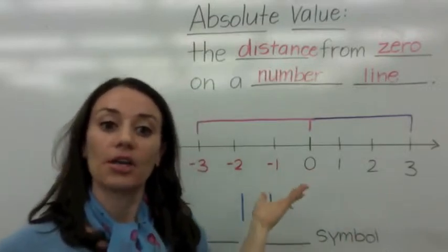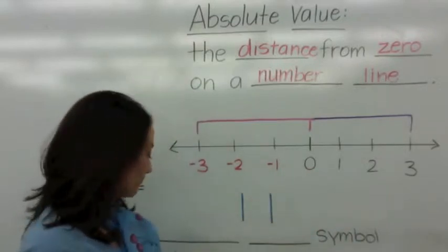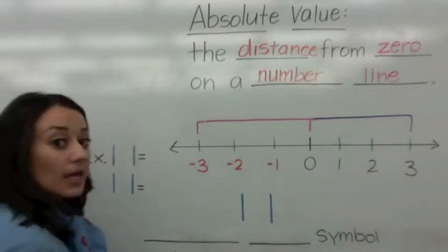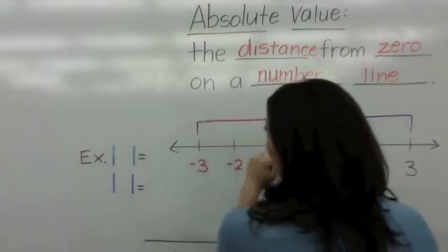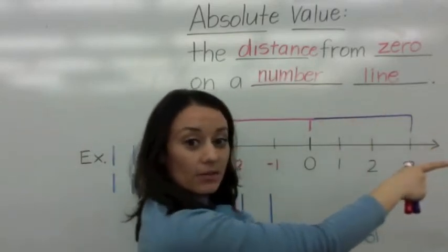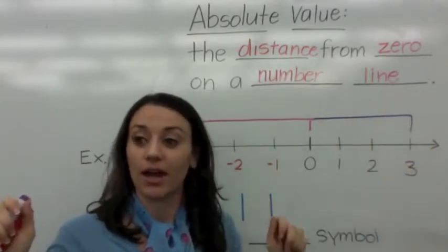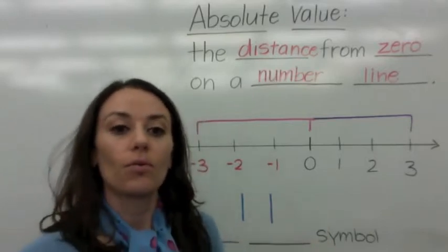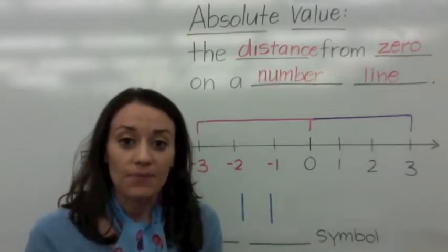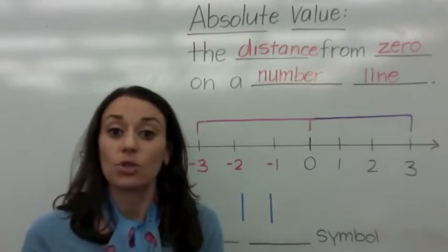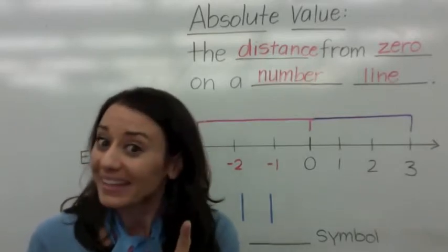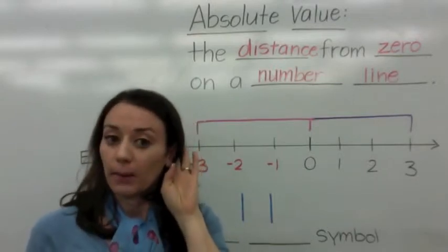Distance can be on a number line. On a number line, you have negative to the left and positive to the right. When we talk about absolute value, it no longer matters which direction you're going.